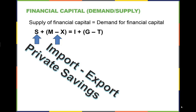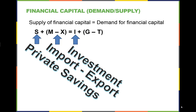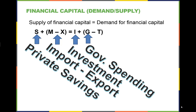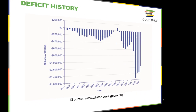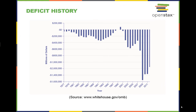The demand side of financial capital is private, non-governmental investment, denoted by I in the equation. G, or governmental spending, minus T, taxation, is the other component of the demand side. As governments demand financial capital, this is a budget deficit. The United States has run a budget deficit for over 30 years, with the exception of 1999 and 2000.